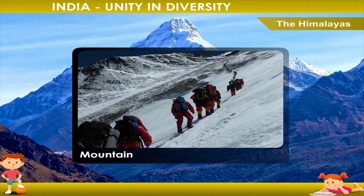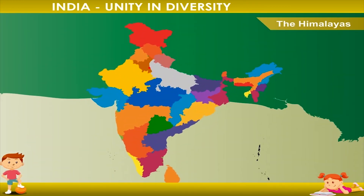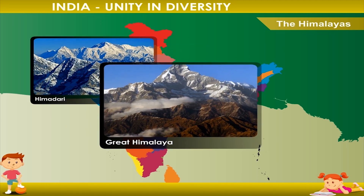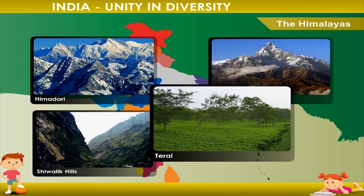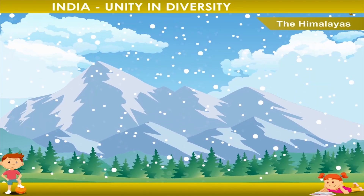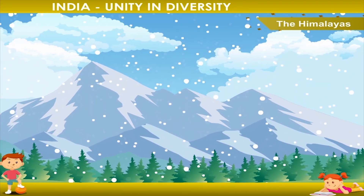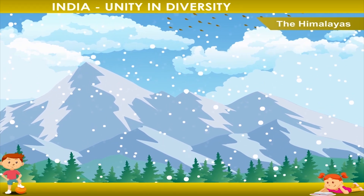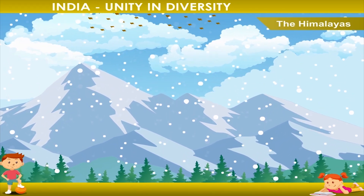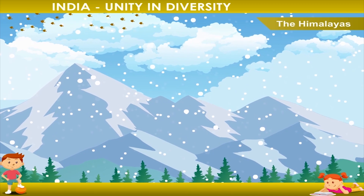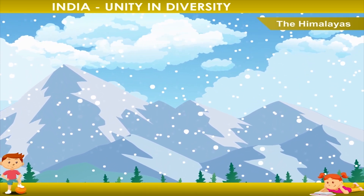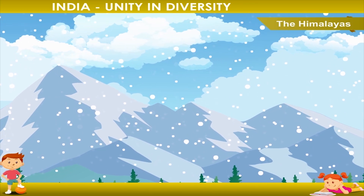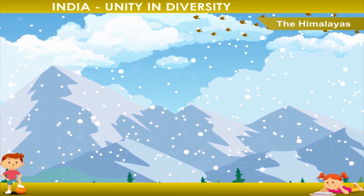The Himalayas are divided into four parallel zones: Himadri or the Great Himalaya, the Shivalik Hills, and the Terai. The Himadri is the Great Himalaya. It is present in the extreme north and is the highest part, always covered with snow. In some places the snow moves slowly — this movement of snow is called glaciers.